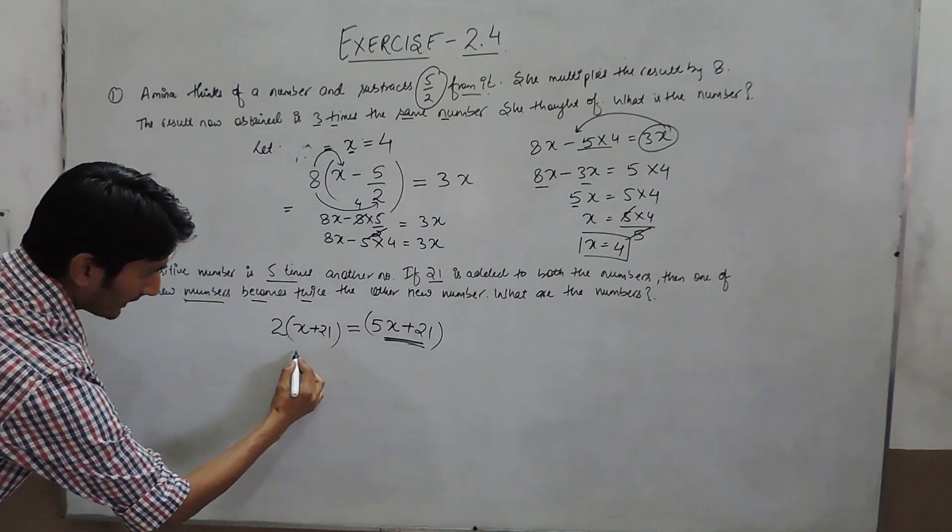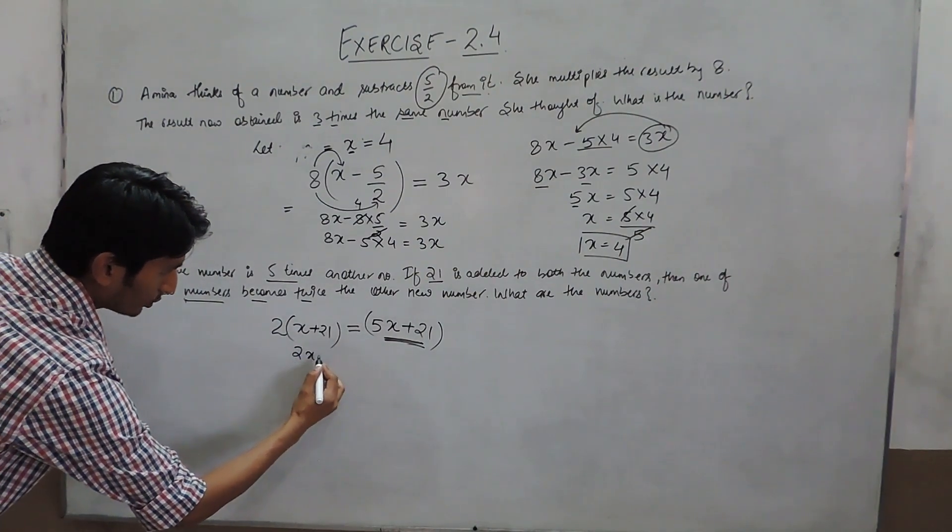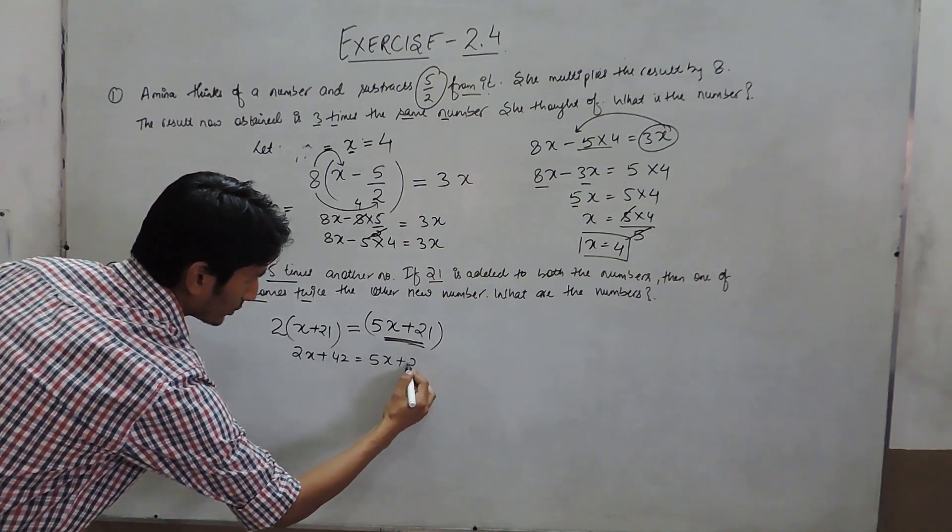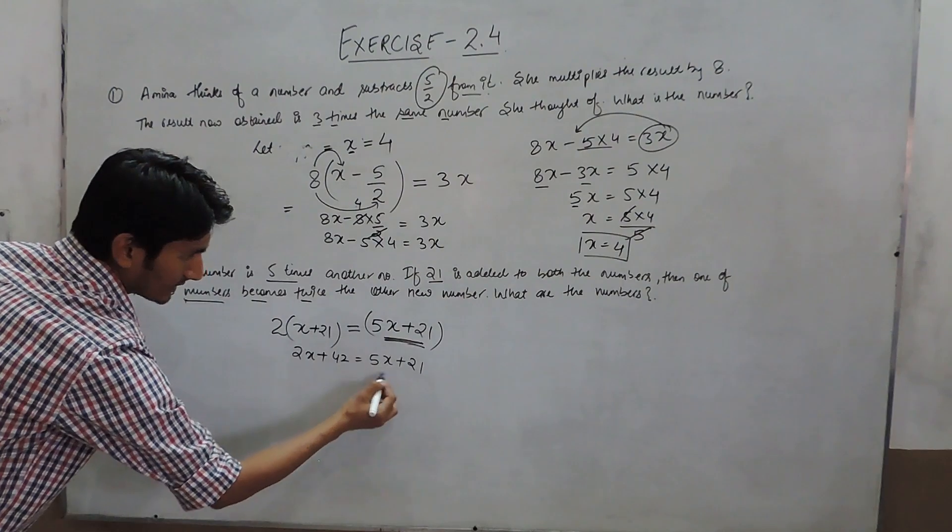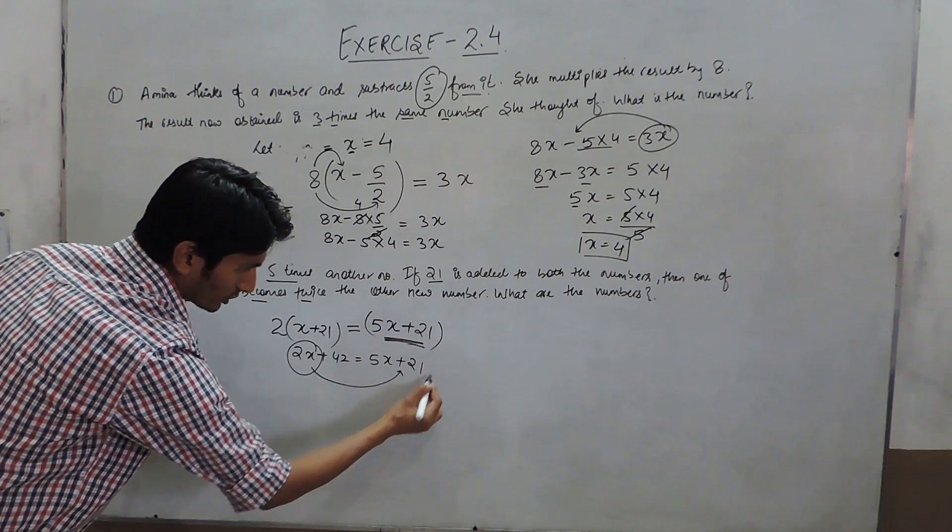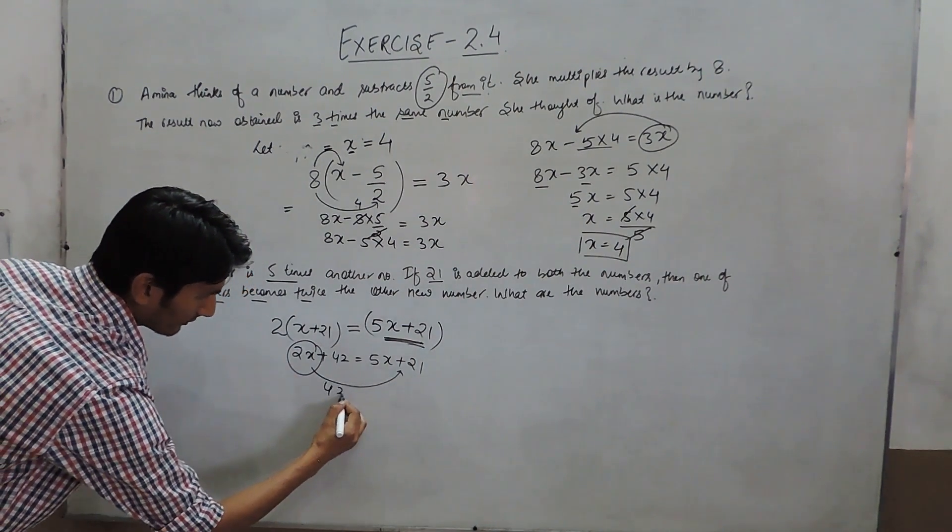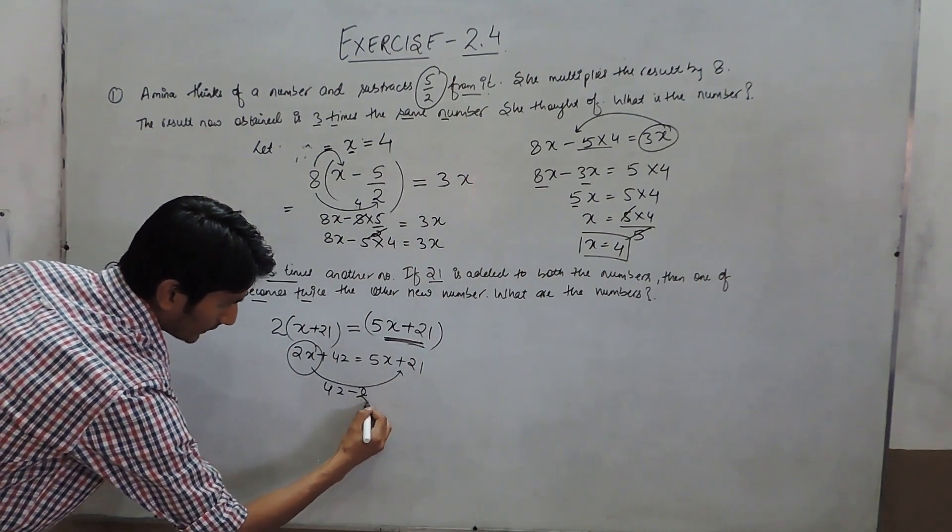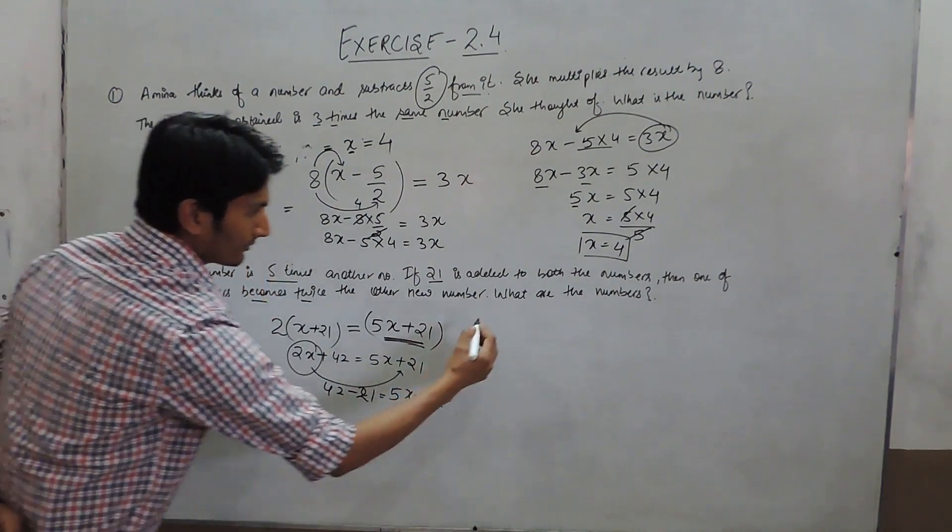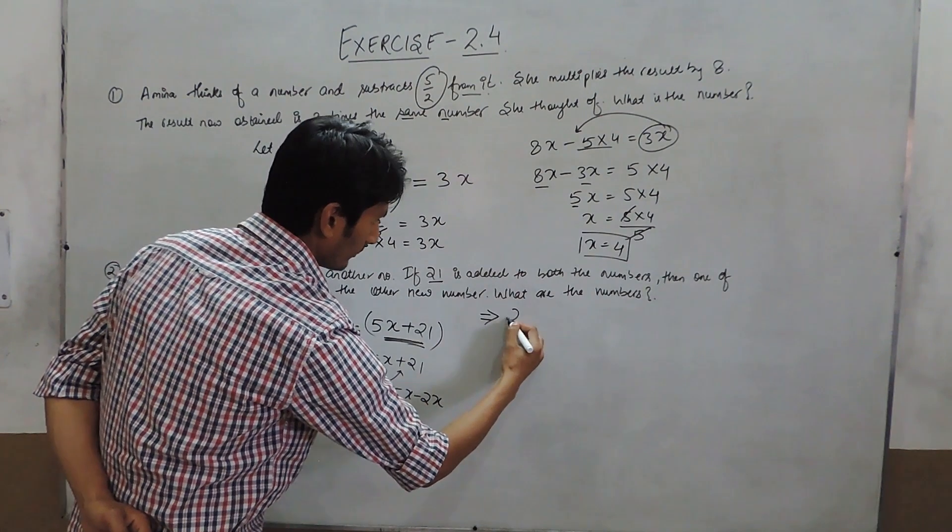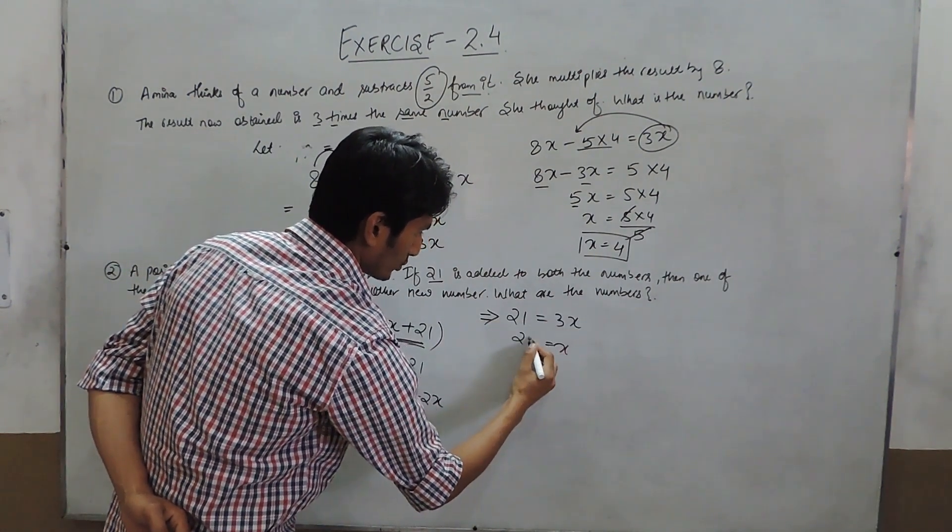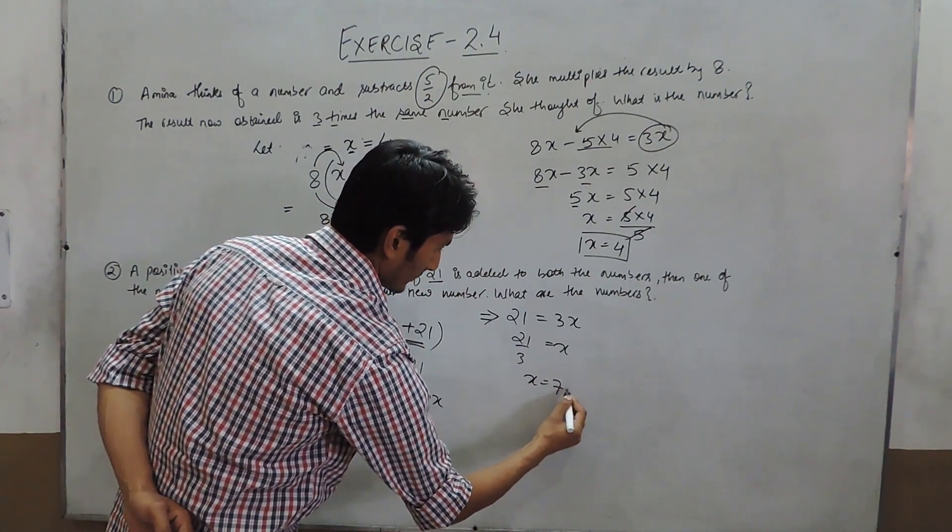Solving this equation, we have 2x + 42 equals 5x + 21. When the variable is shifted to this side and the constant to this side, we get 42 - 21 = 5x - 2x. Solving it, we have 21 = 3x, and x = 21/3 which equals 7.